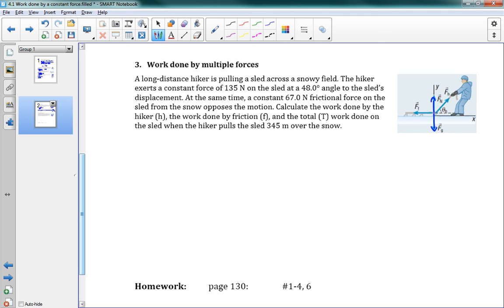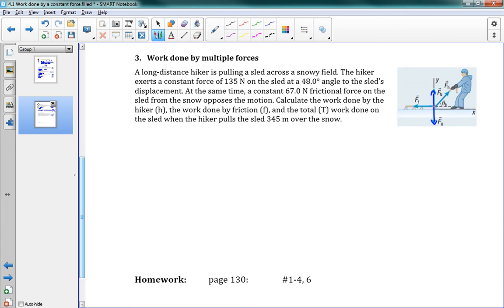In this problem, it says a long-distance hiker is pulling a sled across a snowy field. The hiker exerts a constant force of 135 newtons on the sled at a 48-degree angle to the sled's displacement. At the same time, a constant 67 newtons frictional force on the sled from the snow opposes the motion. Calculate the work done by the hiker, the work done by friction, and the total work done on the sled when the hiker pulls the sled 345 meters over the snow.